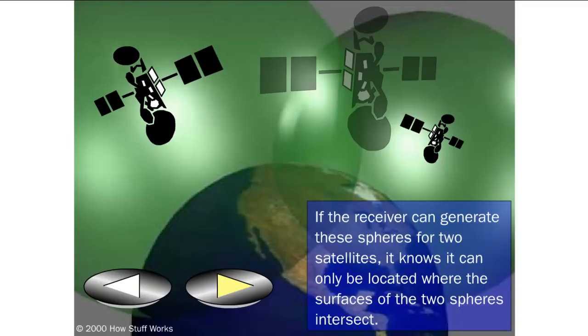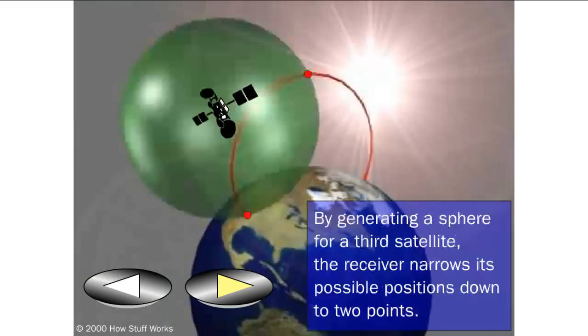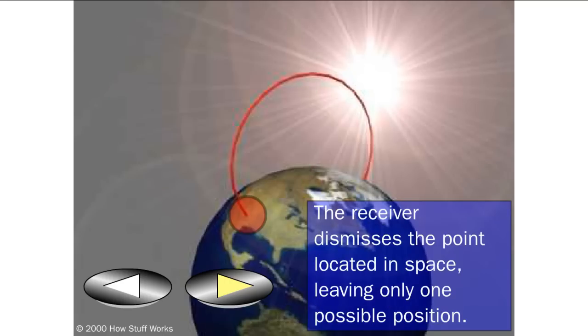If the receiver can generate these spheres for two satellites, it knows it can only be located where the surfaces of the two spheres intersect. The two spheres overlap in a ring of possible receiver positions. By generating a sphere for a third satellite, the receiver narrows its possible positions down to two points. The receiver dismisses the point located in space, leaving only one possible position.